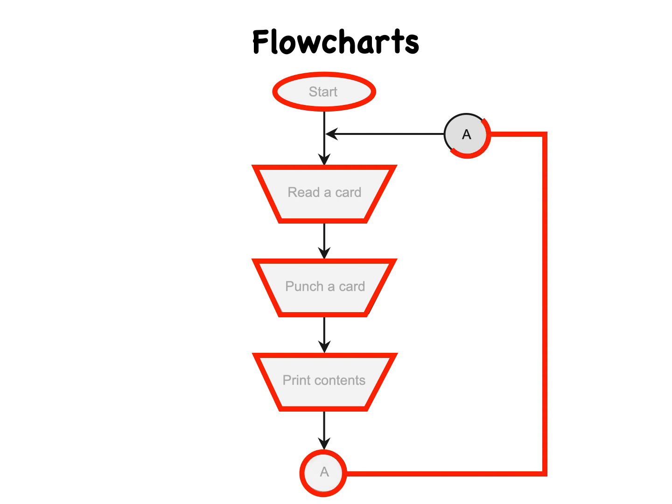The circles marked A represent inflow and outflow points. In this case, they're superfluous, but in complicated flow charts, they can be useful when it would create a mess to include all the applicable dashed lines. The program repeats itself as long as it has cards to read and punch.